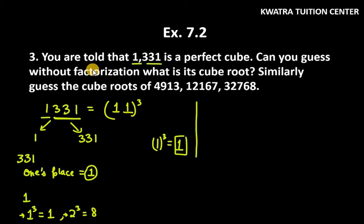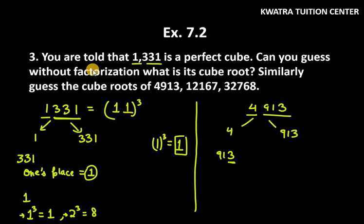Now listen to the next one: 4913. First, make the pairing — from the right, the group is 913, and the remaining part is 4. So we have 2 groups: 4 and 913. Now look at 913 — the ending digit is 3.